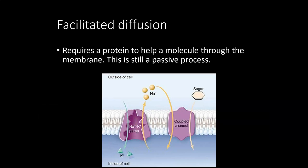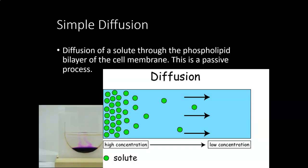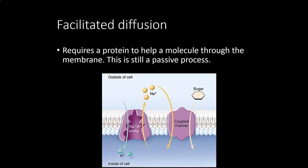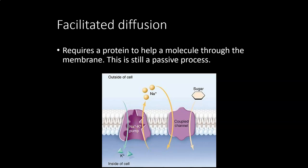Simple diffusion is specifically that movement through the phospholipid bilayer itself. Facilitated diffusion is that same movement, but you need a membrane protein to accomplish it. If food coloring could pass right through, that's simple diffusion. But if it can only get through when a protein opens like a door — that's facilitated diffusion. No energy is spent; it's like having an open door that allows things through without spending any energy.